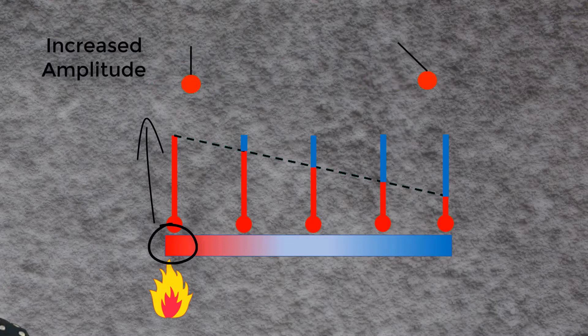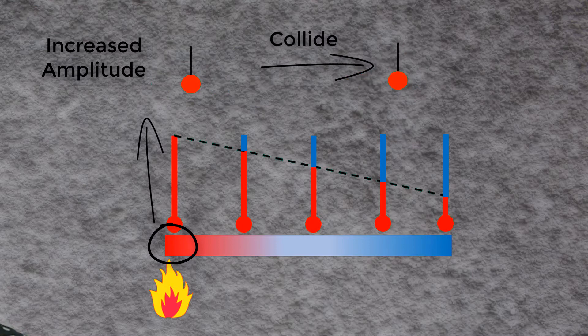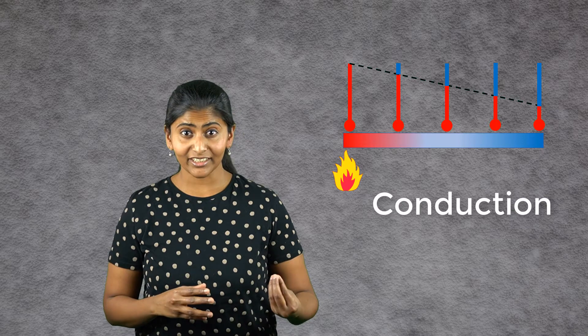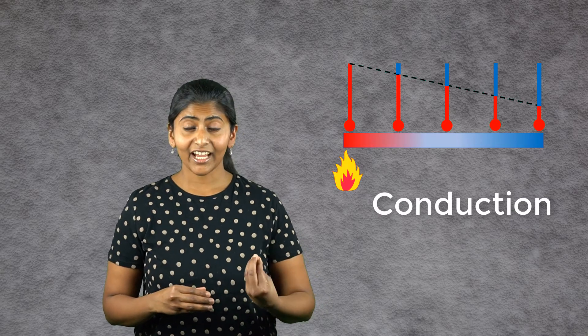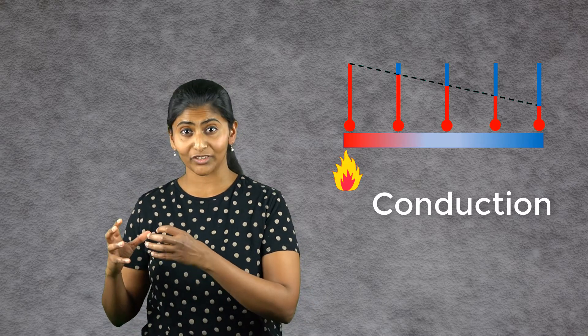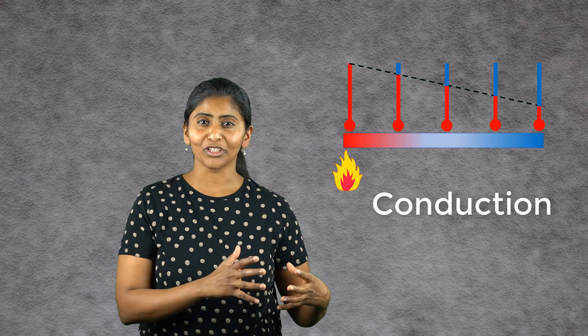Such excited molecules collide with their neighboring molecules, passing on some of their heat energy. The neighboring molecules in turn get excited and collide with the next set of neighboring molecules. Thus, heat energy gets transferred from the hotter portion of the body to the colder portion.